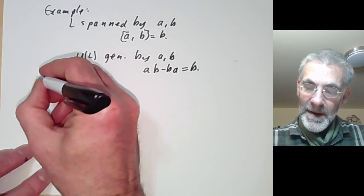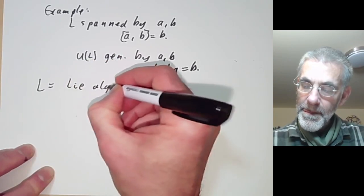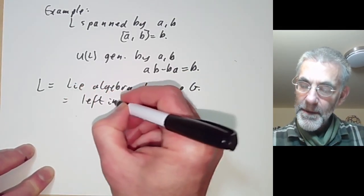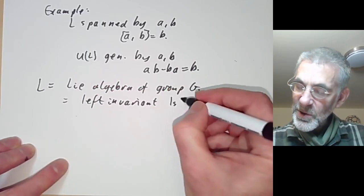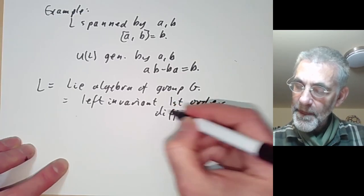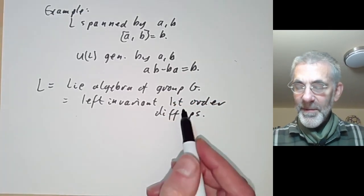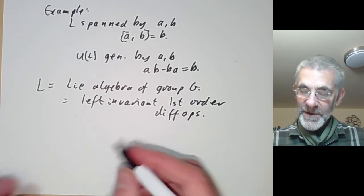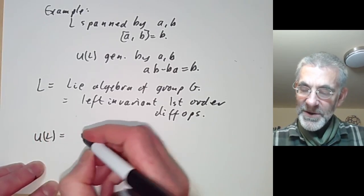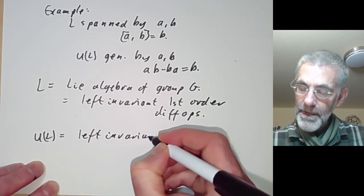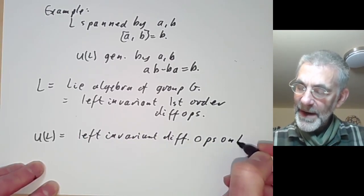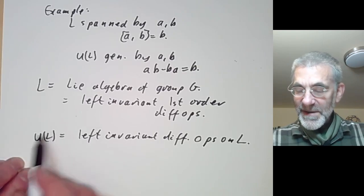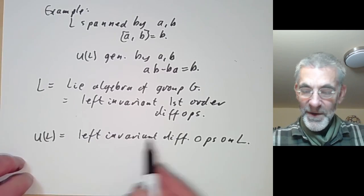Another example: suppose L is the Lie algebra of a Lie group G — that is, the left-invariant first-order differential operators on G. What about higher-order differential operators? It turns out that the universal enveloping algebra of L is just the left-invariant differential operators on G. We will see this later during the course via the Poincaré-Birkhoff-Witt Theorem for Lie groups.